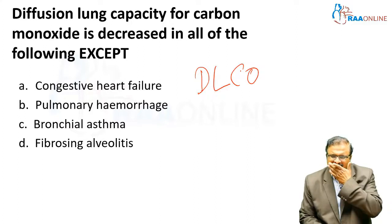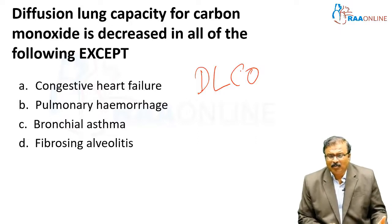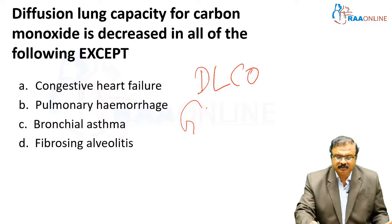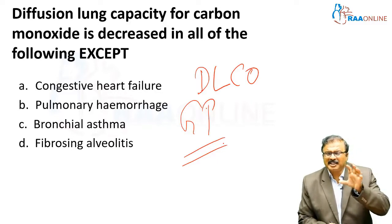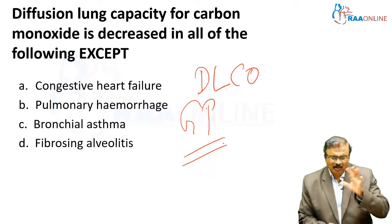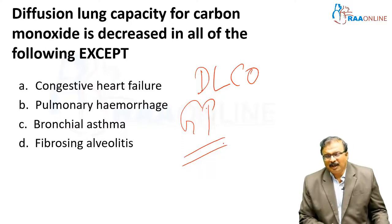DLCO is increased when there is pulmonary hemorrhage. The conditions where you get pulmonary hemorrhage include Goodpasture's syndrome. What happens is there is an antibody against the glomerular basement membrane, which is also present in the alveoli, and this causes diffuse alveolar hemorrhage along with rapidly progressive glomerulonephritis.